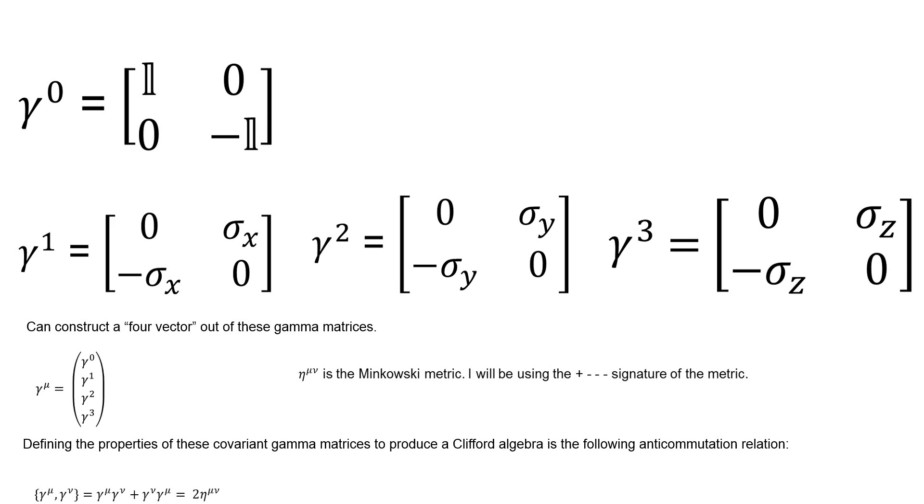We can construct a 4-vector out of these gamma matrices. So we can have gamma mu equals the 4-vector gamma 0, gamma 1, gamma 2, gamma 3, and we are using the Minkowski metric, flat spacetime mu nu, and I'll be using the plus minus minus minus signature.